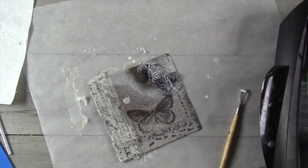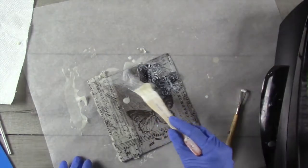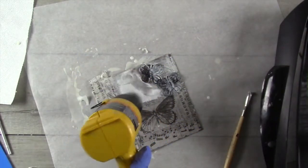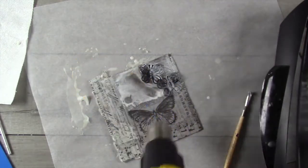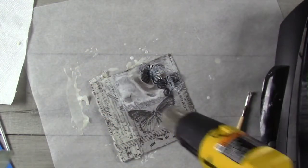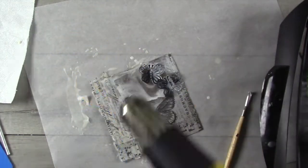Here you see me dabbing on some more white encaustic paint and then fusing it and pushing it around a little bit. I'm trying to get a sort of a misty feel to the piece and the combination of the white and the clear really help to make that happen.